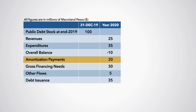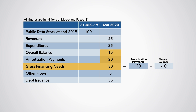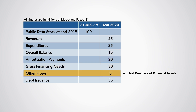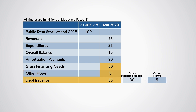Thus, the government's gross financing needs — calculated as amortizations minus the overall balance — are projected to be 30 million. In addition, the other net debt-creating flows are projected to be equal to the net purchase of financial assets for 5 million Macroland pesos. The government must then issue new debt for 35 million to cover the gross financing needs and the other flows.